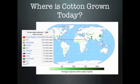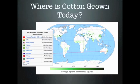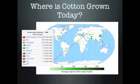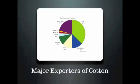Today cotton is grown in tropical and subtropical regions around the world. 75% is grown in developing countries, and 25% in wealthy countries such as the United States and Australia. The largest producers in order are China, India, the United States of America, Pakistan, and Brazil. The United States is the world's largest exporter of cotton, while most of the crop in China, India, Pakistan, and Brazil is used in domestic textile industries.